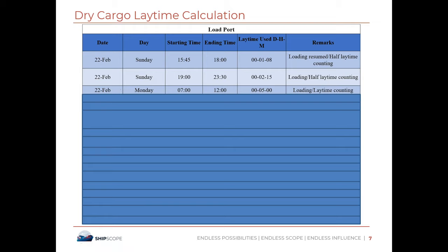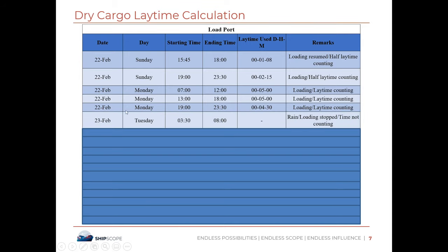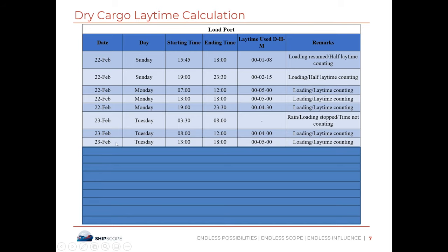On Monday 23rd, everything resumes as normal. First stevedore shift: 0700 to 1200 — five hours. Second shift: 1300 to 1800 — five hours. Third shift: 1900 to 2330 — four and a half hours. On Tuesday 23rd, there is a halt in the morning due to rain from 0330 to 0800, so we start from 0800 instead of 0700. From 0800 to 1200 — four hours. Second shift 1300 to 1800 — five hours. Third shift 1900 to 2330 — four hours 30 minutes.